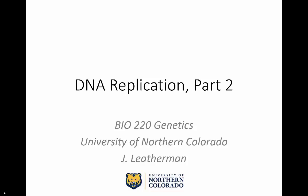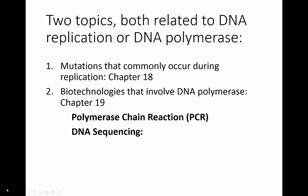This is the second video on the DNA replication unit. I've gone through everything I planned to cover regarding DNA replication. In this video, I'd like to go over a few things peripherally related to DNA replication: first, mutations that commonly occur during replication, found in Chapter 18, and two types of biotechnologies that use DNA polymerase — PCR and DNA sequencing — found in Chapter 19.